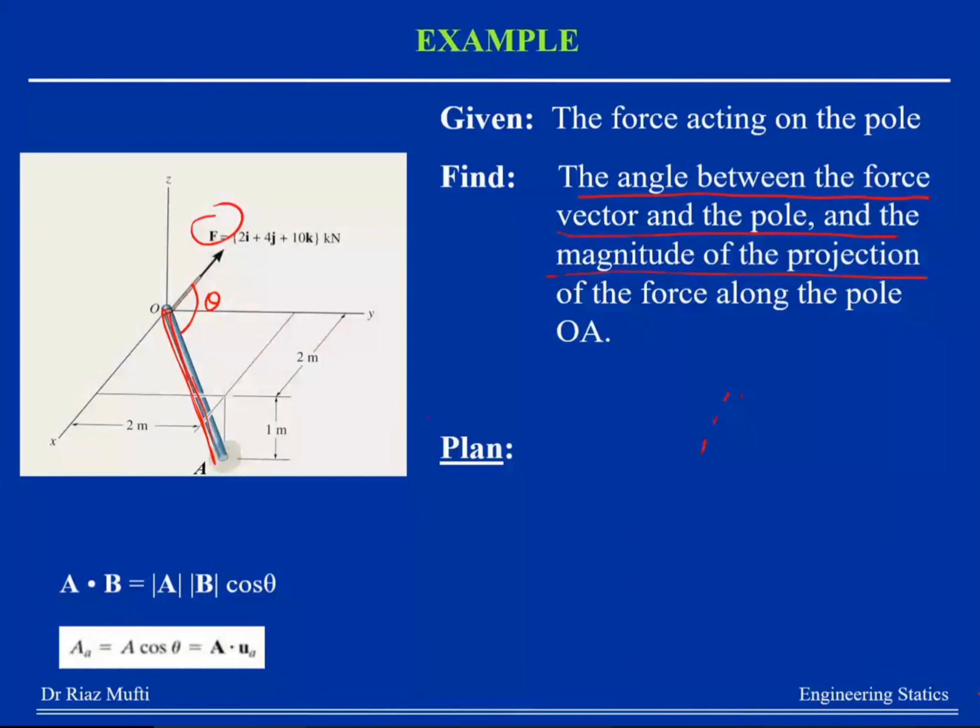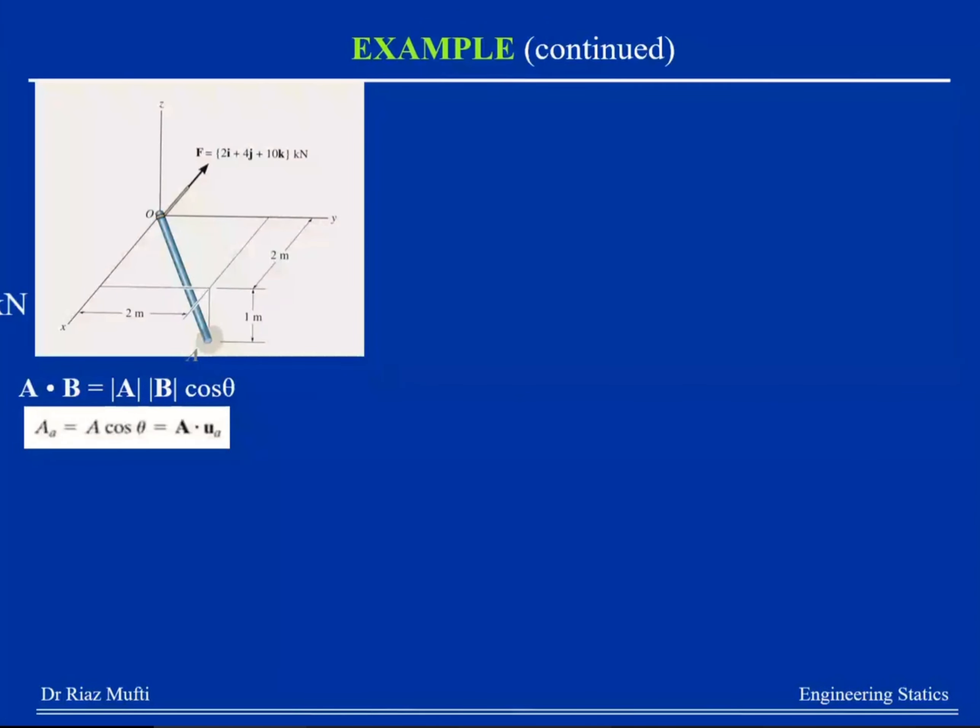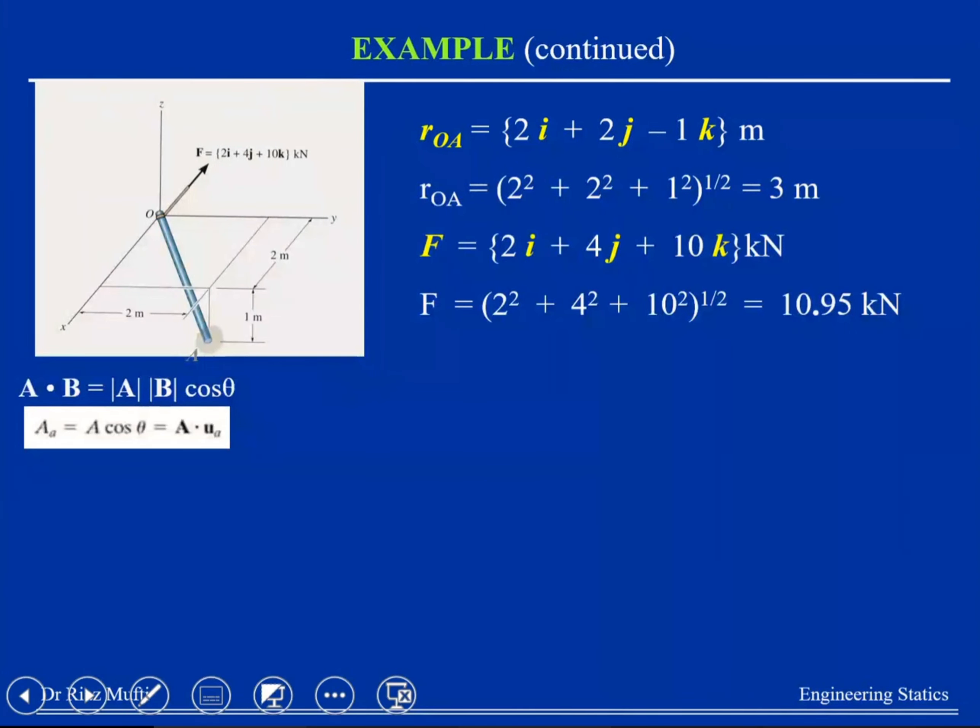So we are after the angle and the projection of F on this OA line. So let's see what we have to do. ROA, because I need the unit vector OA. Position vector OA, that's this one from O to A. I know my coordinates X, Y, and Z. It's fine. So I know my position vector. I know my other vector.